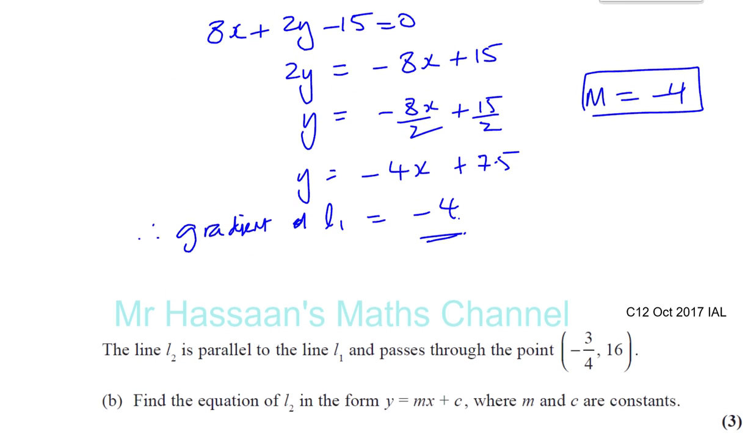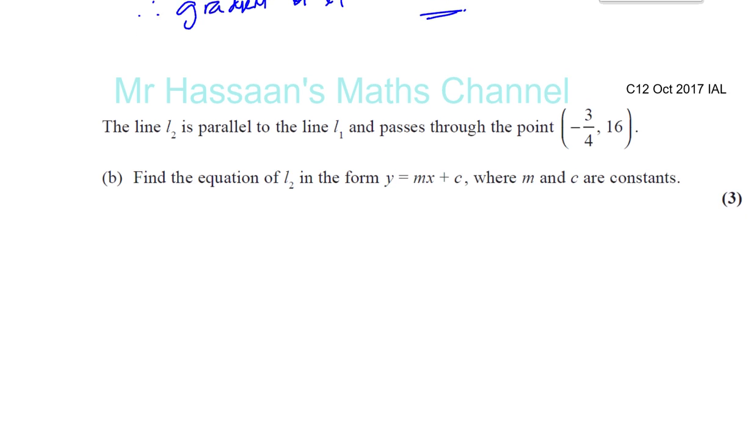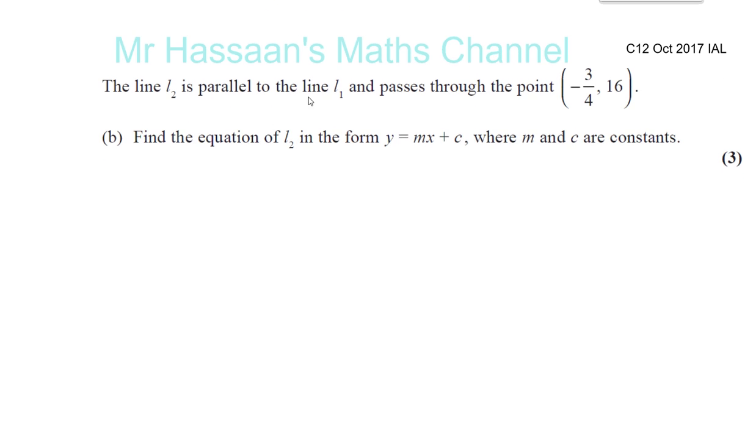Now we're going to move on to part B. It says the line L2 is parallel to the line L1 and passes through the point minus 3 quarters, 16. Find the equation of line 2 in the form y equals mx plus c, where m and c are constants. So that's pretty simple. To find the equation of a straight line, we need two things. One thing, we need the gradient.